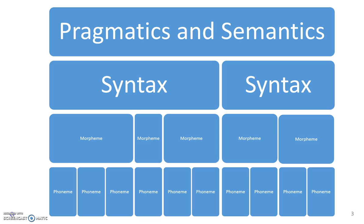Basically you should understand that the big picture is pragmatics and semantics deal with the whole of language, while syntax deals with smaller parts — specifically how sentences are put together and how they form. Morphology is even more specific: it's the words of the language and how the different parts of words have meaning, whereas phonemes are the building blocks of the language that have no meaning on their own. And the same applies to sign language.